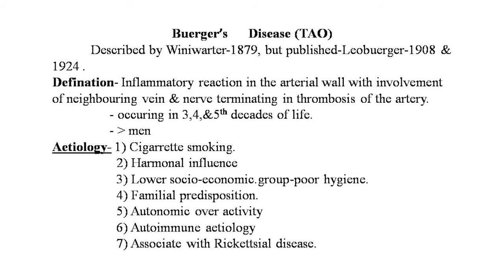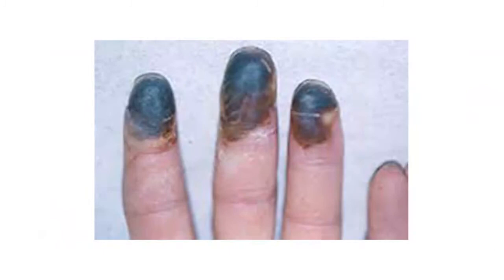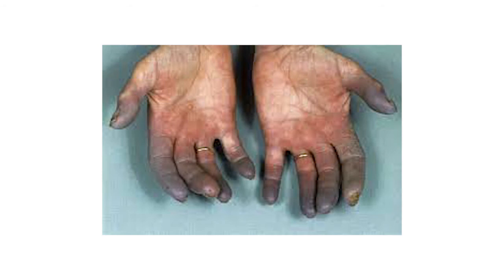Buerger's disease — thromboangiitis obliterans (TAO) — was described by von Winiwarter in 1879 and published by Leo Buerger in 1908 and 1924. It is an inflammatory reaction in the arterial wall with involvement of neighboring veins and nerves, terminating in thrombosis of arteries, occurring in the third to fifth decades of life; men are predominantly affected. Typical images show the bluish-blackish discoloration of fingers characteristic of Buerger's disease.